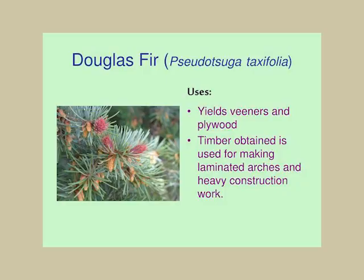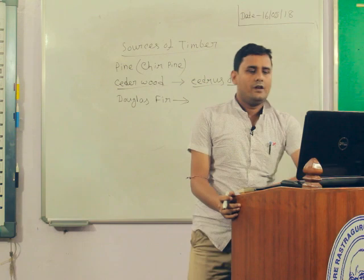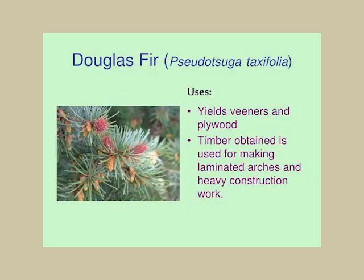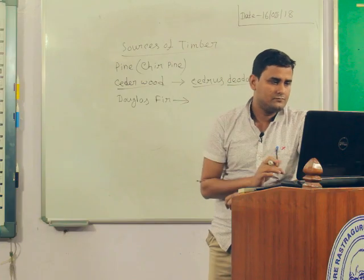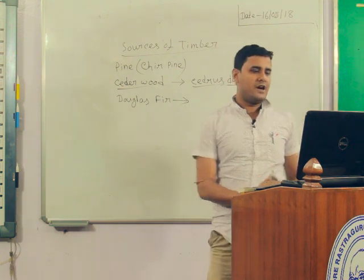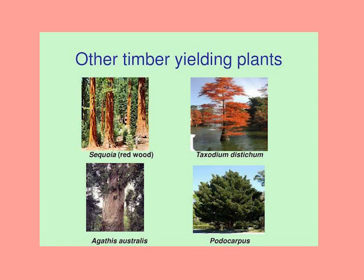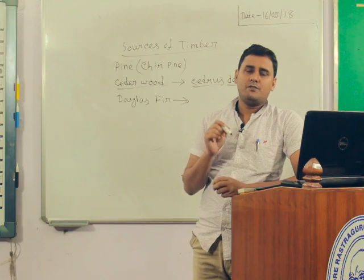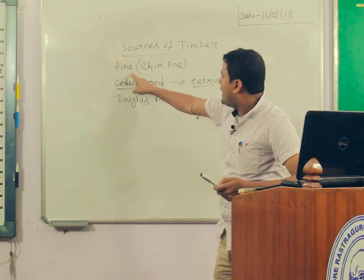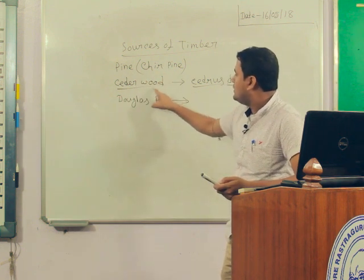Douglas fir is mainly used in veneers and plywood timber, and it is also used for construction work. Other timber-yielding plants are Sequoia, Taxodium, Agathis, and Podocarpus.